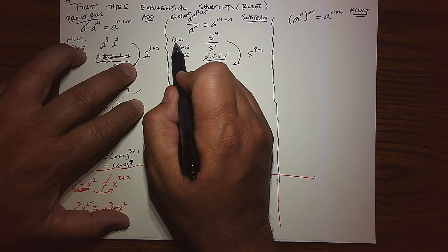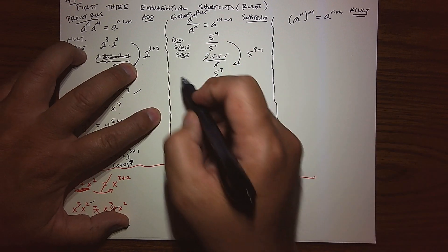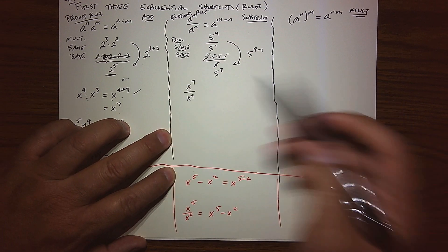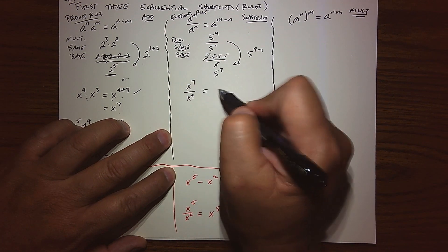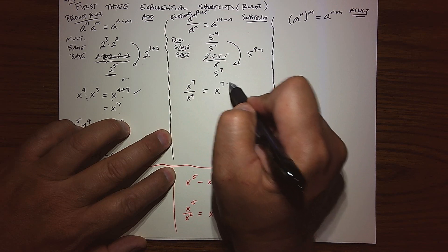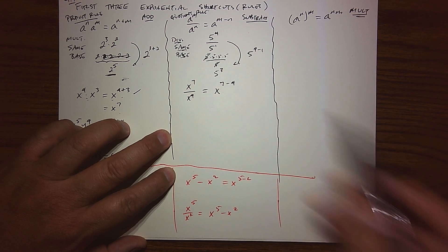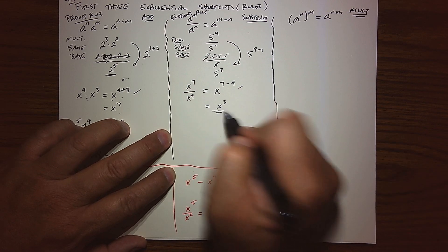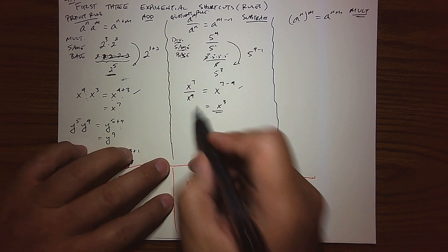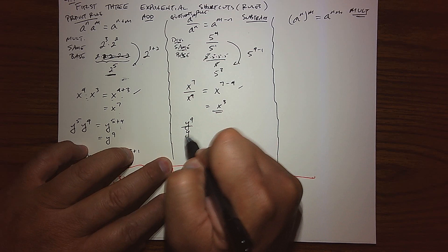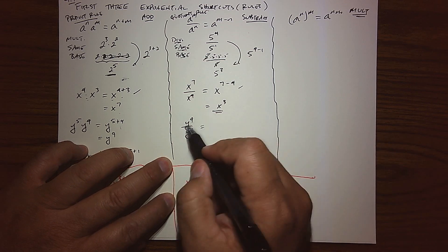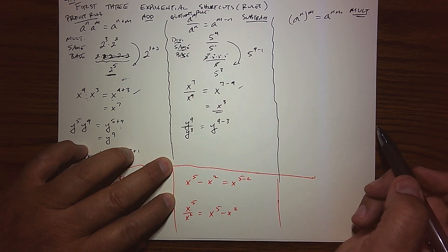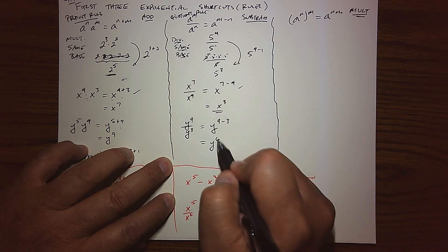To use the quotient rule, we have to be dividing by the same base. If I had x to the 7th divided by x to the 4th, I am dividing by the same base. The quotient rule says to keep that base, and take the top exponent minus the bottom — please show me that step that shows you see the rule and you're using it. Simplifying, x to the 3rd is our final answer. And if we had y to the 9th over y to the 3rd, we have division with the same base, so keep the base: top exponent minus bottom exponent gives y to the 6th.